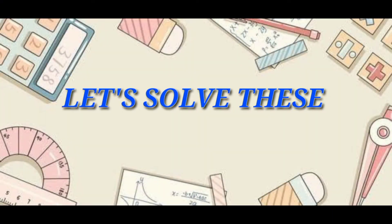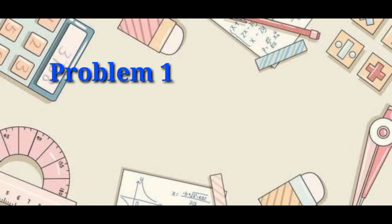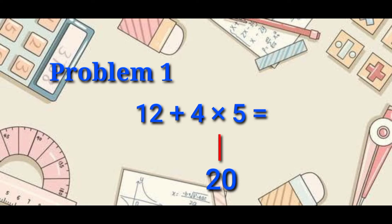Let's solve these problems. Problem number 1: 12 plus 4 times 5 equals. Let's do the multiplication first. 4 times 5 equals 20. Then add 12 equal to 32.